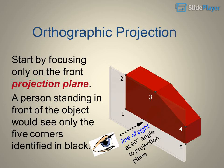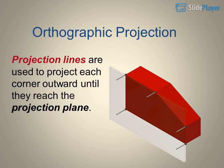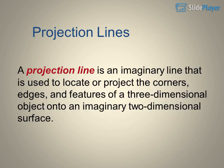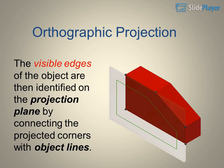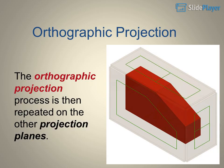Start by focusing only on the front projection plane. A person standing in front of the object would see only five corners. The line of sight is at a 90-degree angle to the projection plane. Projection lines project each corner outward until they reach the projection plane. A projection line is an imaginary line used to locate the corners, edges, and features of a three-dimensional object onto an imaginary two-dimensional surface. The visible edges are then identified on the projection plane by connecting the projected corners with object lines. This process is then repeated on the other projection planes.